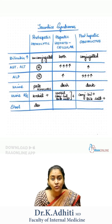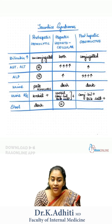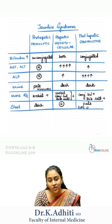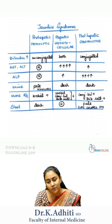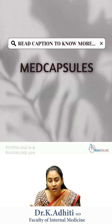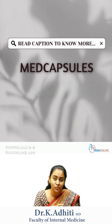When you look at the stool, it is the exact opposite. So pale urine and dark stool is hemolytic jaundice. Whereas for hepatocellular and obstructive, you have dark urine, and in obstructive, you have pale stools.